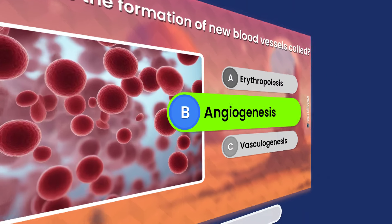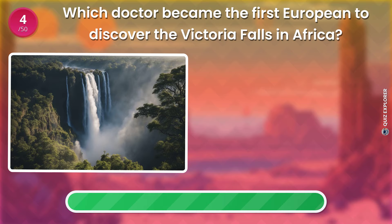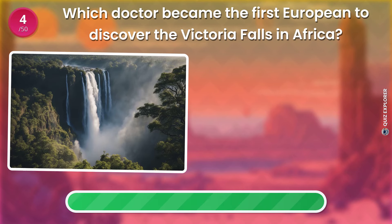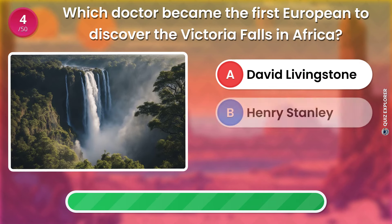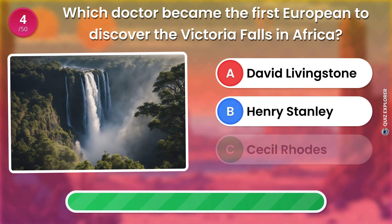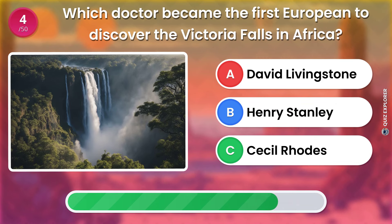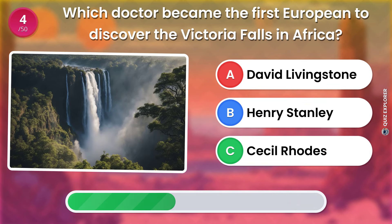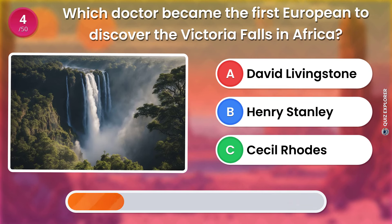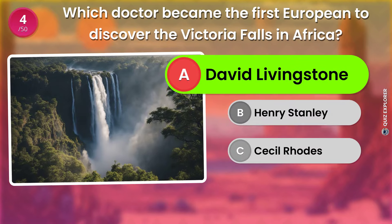Which doctor became the first European to discover the Victoria Falls in Africa? David Livingstone. Henry Stanley. Cecil Rhodes. The answer is: David Livingstone.